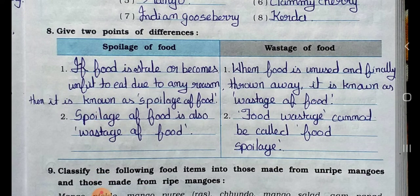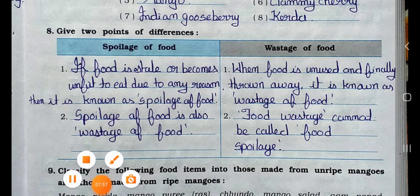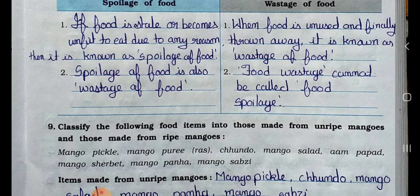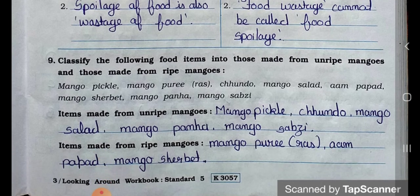Main question 8: Give two points of difference between spoilage of food and wastage of food. Point 1: Food spoilage is when food becomes stale or unfit to eat for any reason; food wastage is when food is unused and finally thrown away. Point 2: Spoilage of food is also a form of wastage, but food wastage cannot always be called food spoilage.